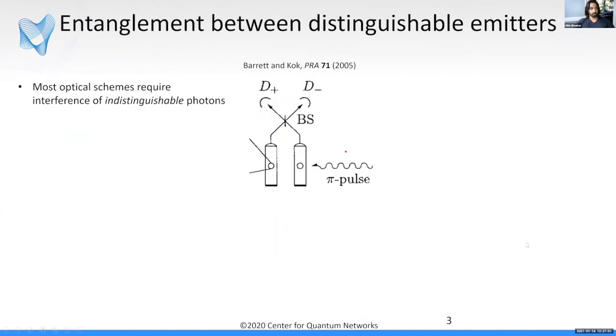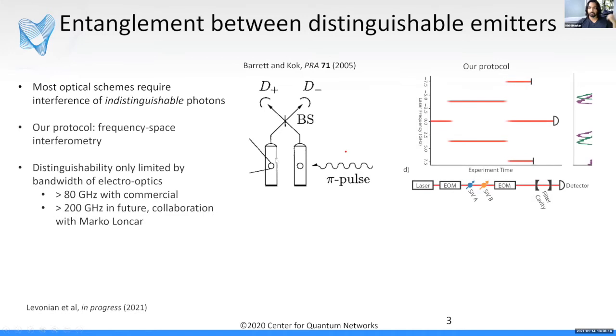I'll share some of our preliminary results. In terms of entangling distinguishable emitters, as I mentioned, most schemes require detection of an indistinguishable photon using a type of interference such that when you get a detection click, you don't know which of the two emitters it came from, thereby creating entanglement between the two.